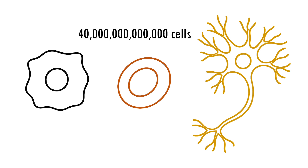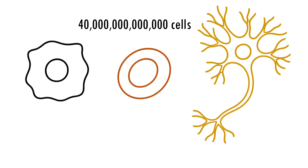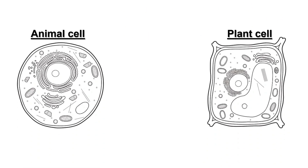Now let's look at the structure of cells. We'll begin by comparing animal and plant cells side by side to highlight their similarities and differences. To understand cell structure, we need to look at the different parts that make up a cell. These smaller parts are called organelles.